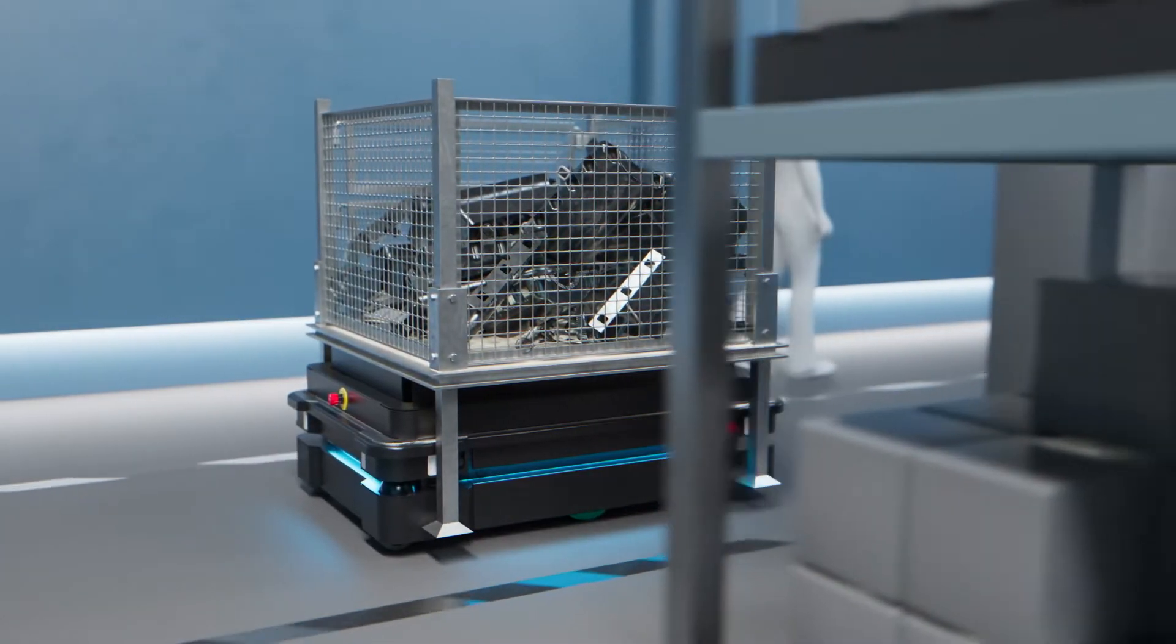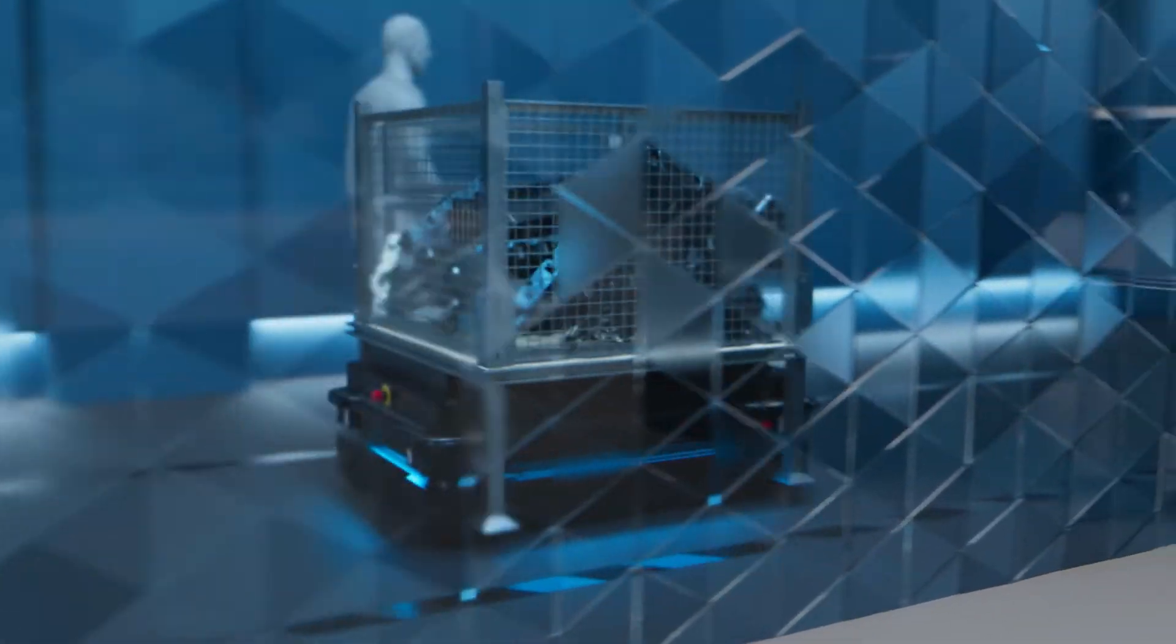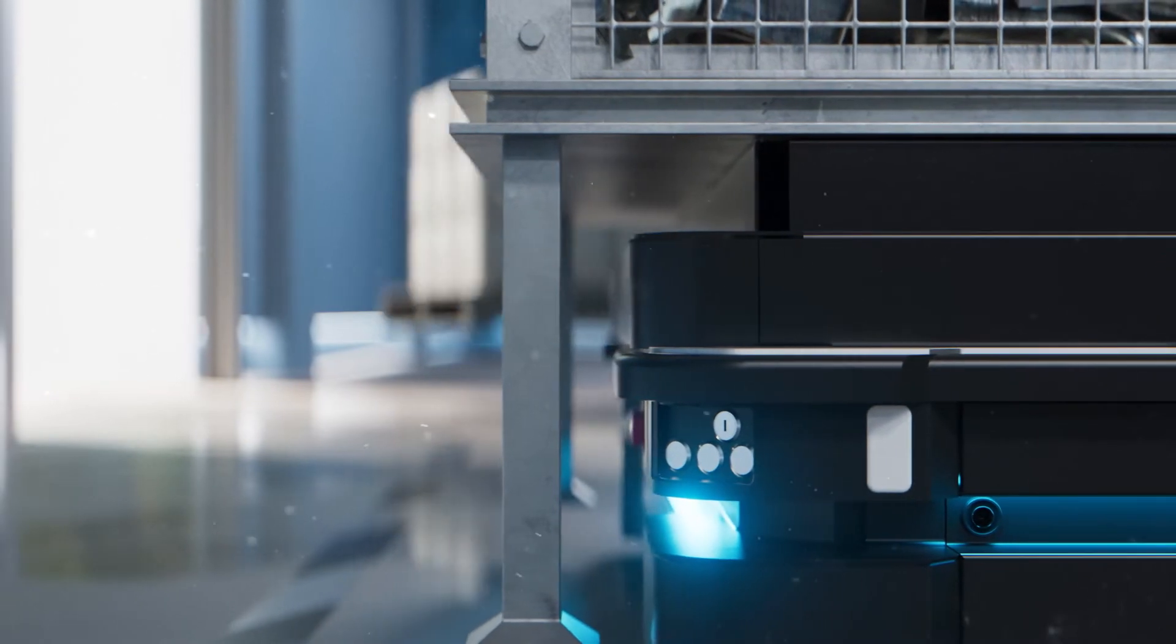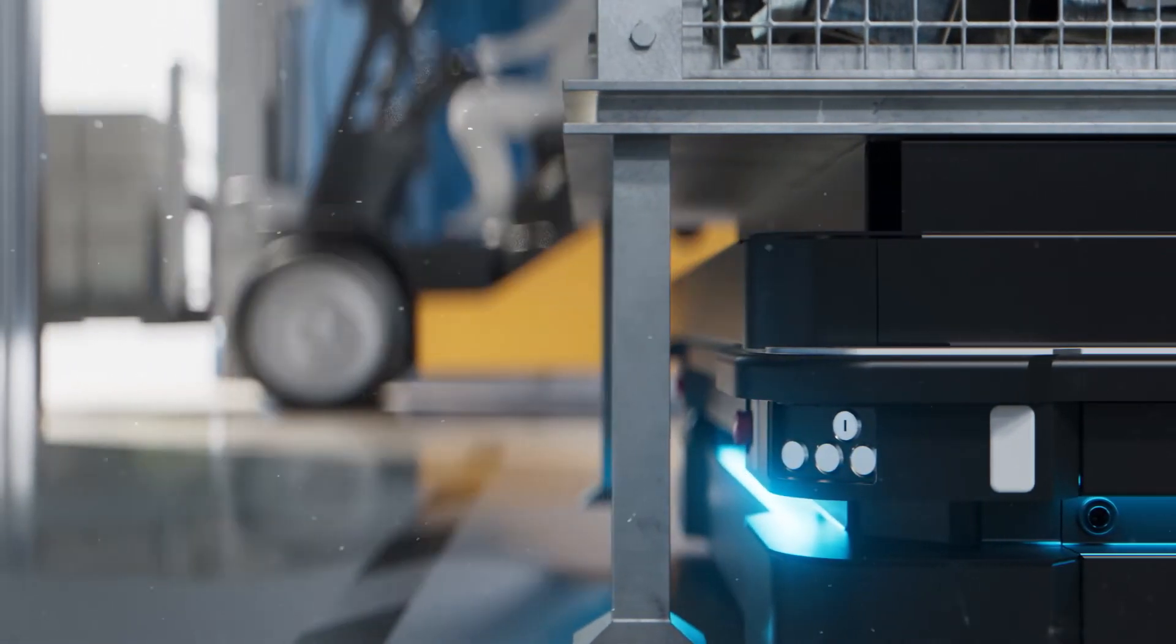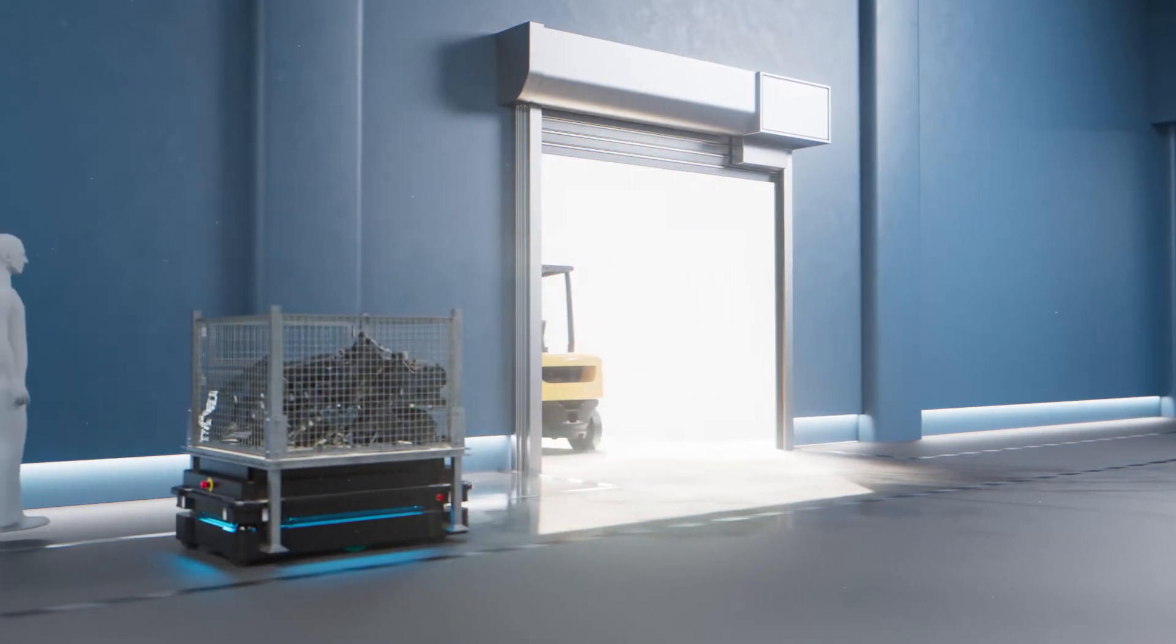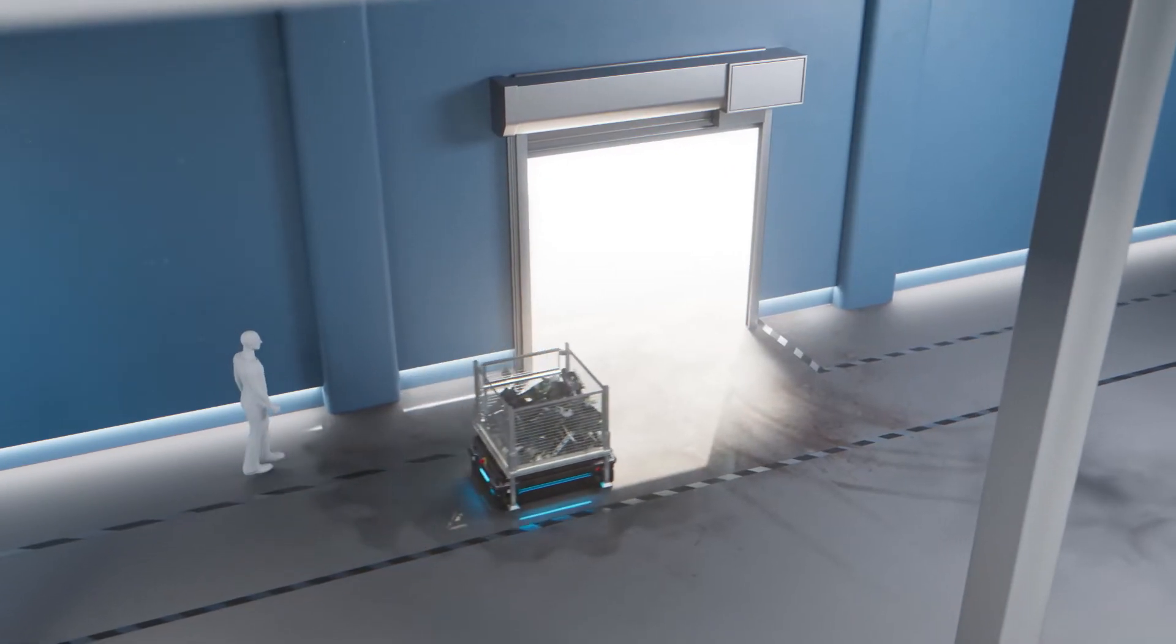The MiR 600 and MiR 1350 are designed to work within a wide range of applications and environments. Whether you need to optimize internal logistics in your core production, raw material storage, or your inbound and outbound logistics, the MiR industry-grade-proven robots are your solution.